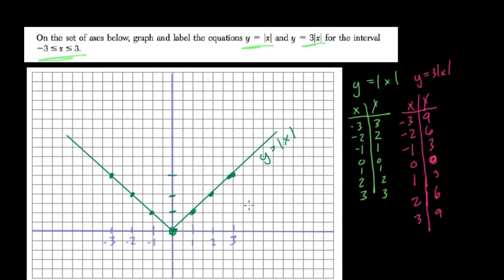We still have 0, 0, but then we have the point 1, 3. Instead of 1, 2, we have 1, 3, it's a little bit steeper. Instead of 2, 2, we have 2, 6. So 1, 3 would actually be here, and negative 1, 3 is symmetrical.